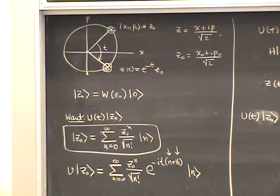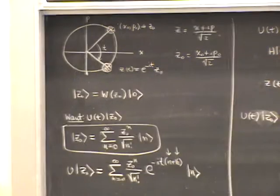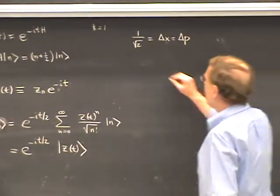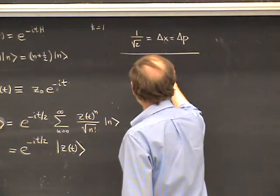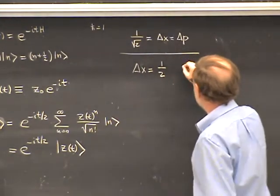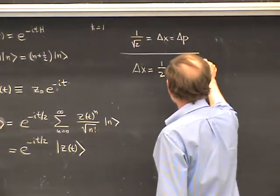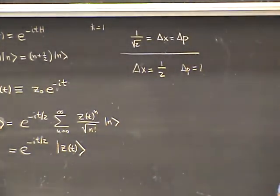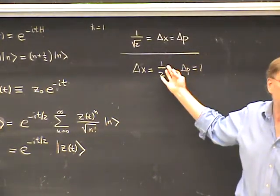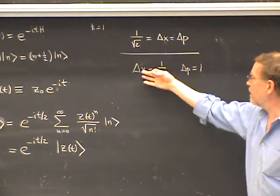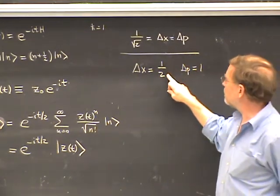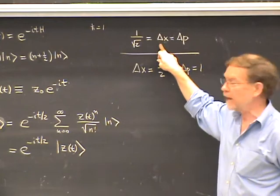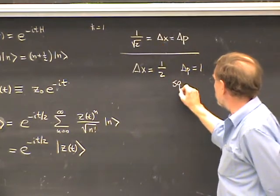Let me mention one thing: if we had chosen an initial state in which the dispersions were not equal but it was still a minimum uncertainty wave packet — suppose for example delta x were one half and delta p were equal to one — then the product delta x times delta p still has its minimum value of one half. So this is a minimum uncertainty wave packet, but the delta x is now smaller than it was for the coherent state.